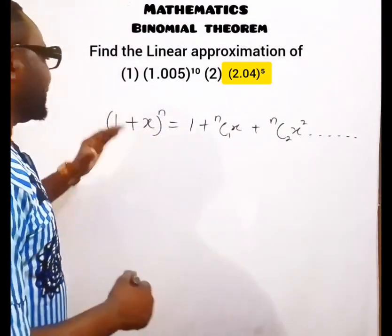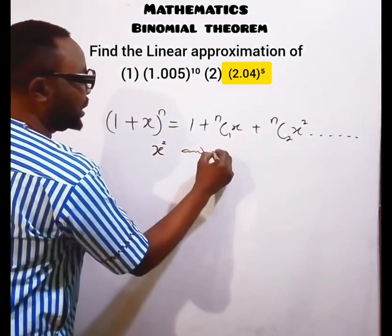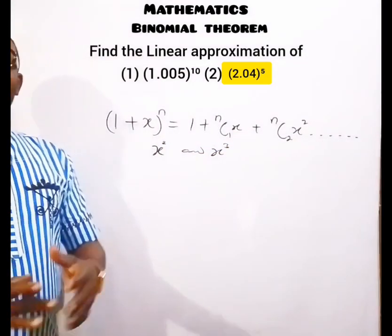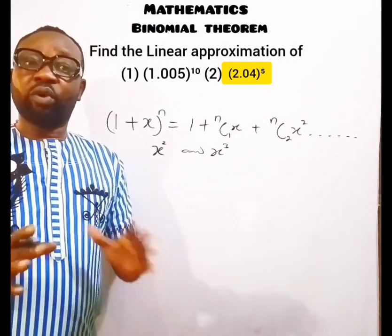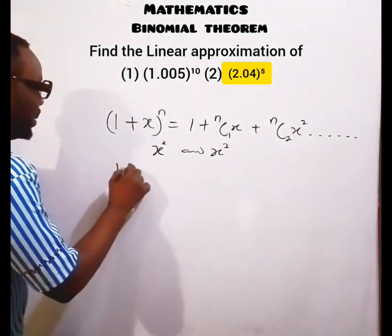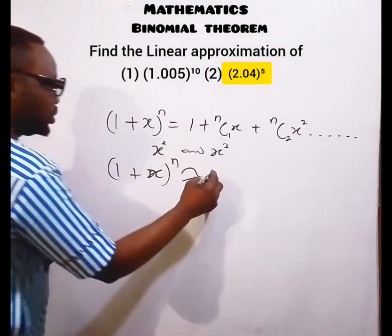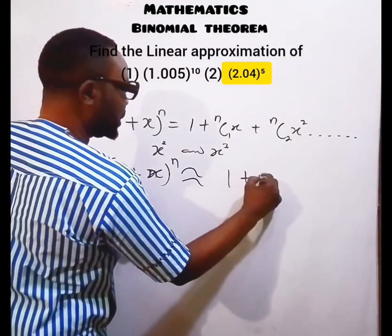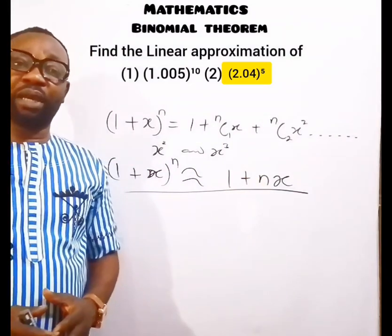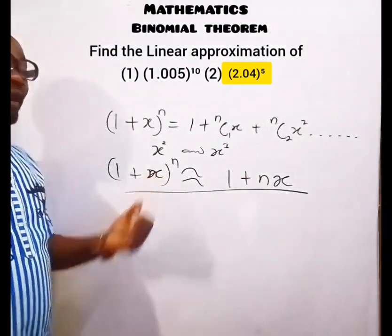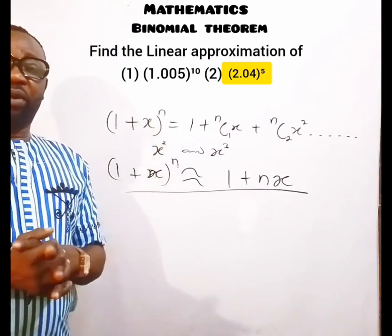If x is so small that x², x³, and higher terms become negligibly small and are essentially ignored, then (1 plus x) raised to the power of n is approximately equal to 1 plus nx. This is what we call linear approximation — but the value of x must be very, very small. Let's apply that to the next question.